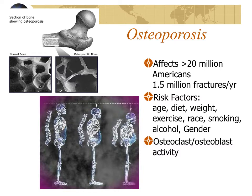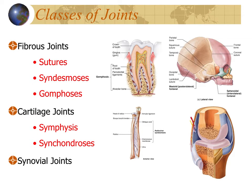Over time in older people, calcium loss may outpace calcium deposition, leading to osteoporosis. This disease affects primarily older adults and is a major cause of bony fractures — over 1.5 million per year. It occurs in older people with reduced growth hormone and reduced sex hormones. Diet, weight, exercise, smoking, and alcohol consumption all affect it. Elderly women are primarily affected because they've stopped producing estrogen, which reduces the activity of bone-depositing cells, leading to spontaneous fractures and loss of height.